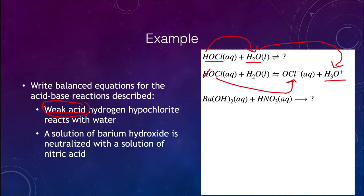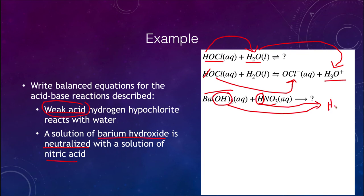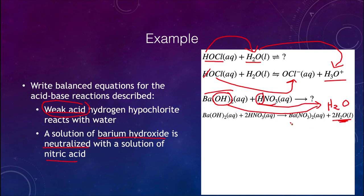The second example is a neutralization reaction: barium hydroxide (the base) and nitric acid (the acid). Combining the OH and H gives water (H2O). What's left over is barium and nitrate, which combine to give barium nitrate as the salt in aqueous solution. Always make sure the equation is balanced — you may need to rework it, as the balancing may not be automatic.